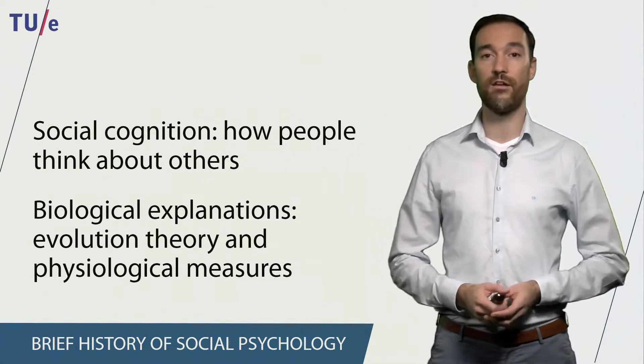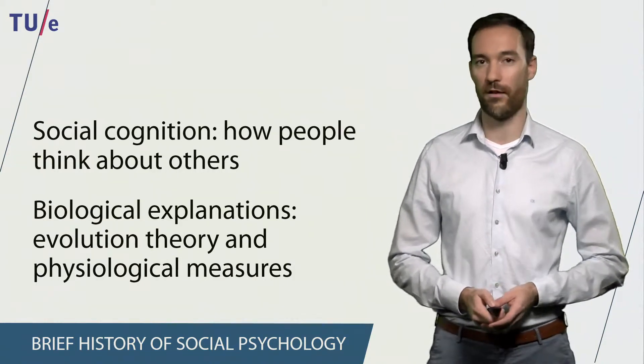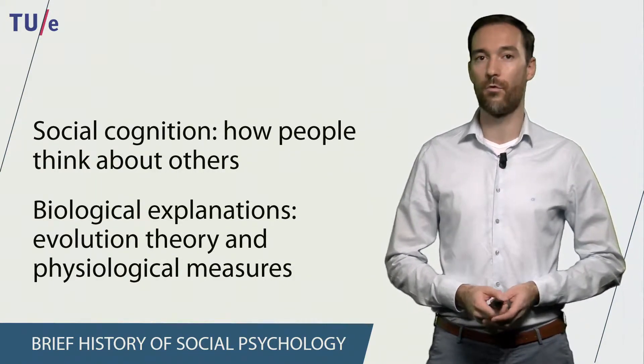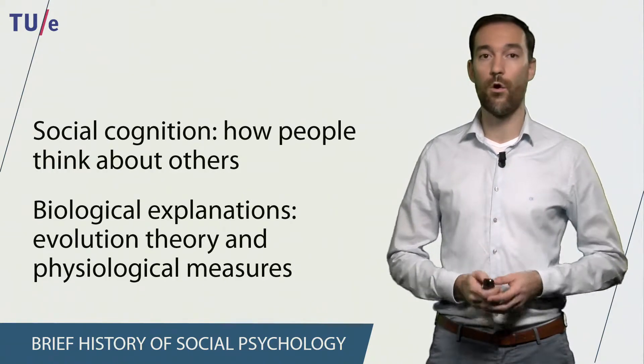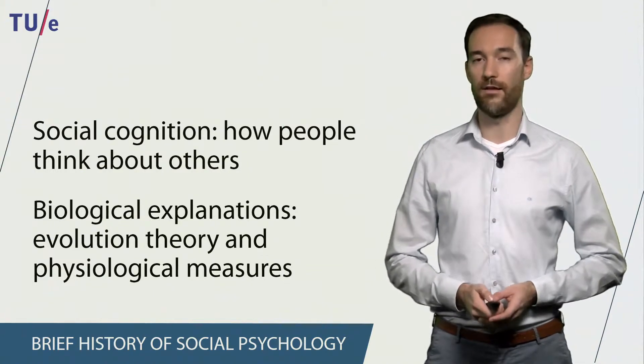And finally, since the 1990s there has been an increased interest in biological explanations of human behavior, so we can use evolution theory or physiological measures to try to understand why people behave the way they do.